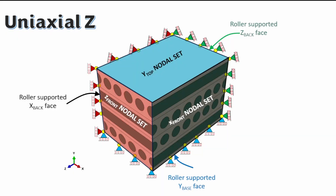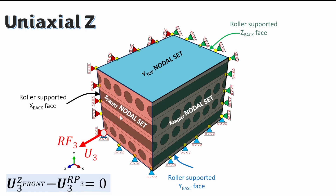Finally, for the uniaxial Z direction, we move to reference point 3 and displace the system in the third axis. The simulation will output the reaction force and displacement in the third axis, which is the Z axis. We then kinematically link what is happening at reference point 3 to the Z front face using a constraint equation, completing the setup for Z-direction deformation.